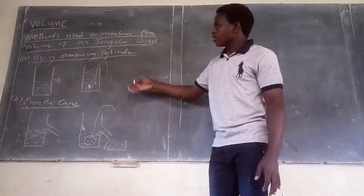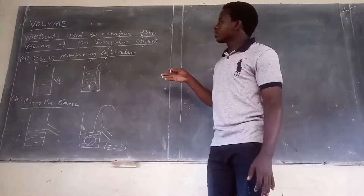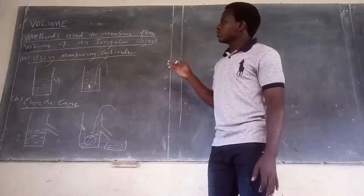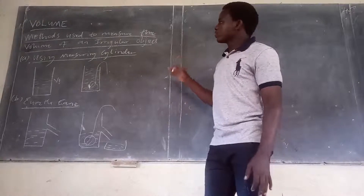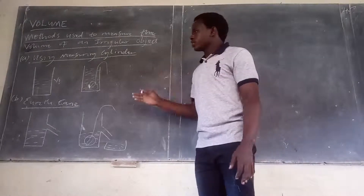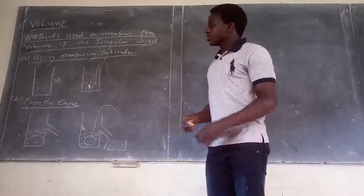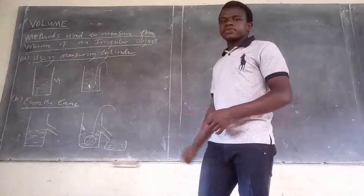These are the two methods you can use to find the volume of an irregular object — using the measuring cylinder and using the Eureka can.